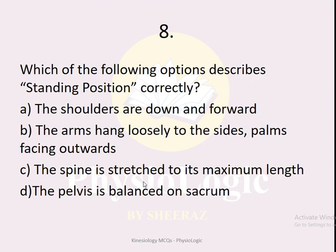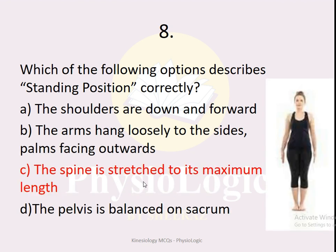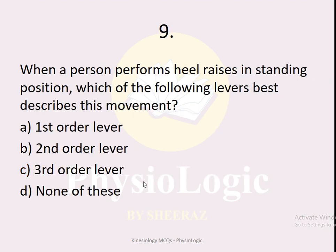MCQ number eight: which option correctly describes the standing position? Option A: shoulders are down and forward. Option B: arms hang loosely, palms facing outwards. Option C: spine is stretched to its maximum length. Option D: pelvis is balanced on sacrum. The correct option is C — the spine is stretched to its maximum length. Option A is wrong because shoulders are backward in standing. Option B is wrong as palms face inwards. Option D is wrong because the pelvis is balanced on femoral heads, not the sacrum.